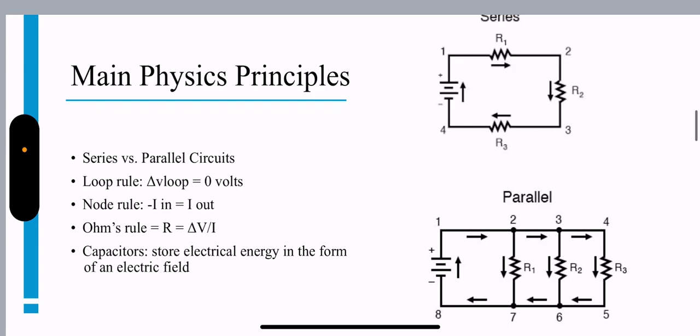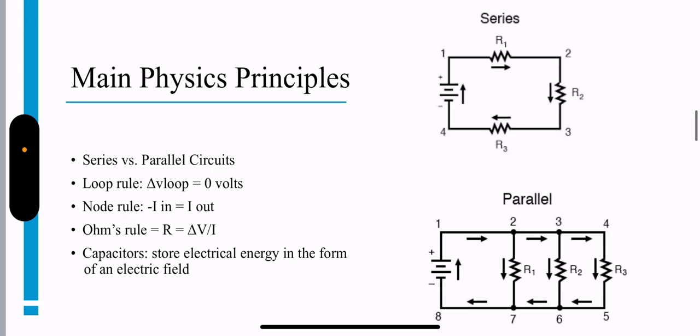Main physics principles. A series versus parallel circuit. A series is a loop while a parallel circuit has multiple loops that you can look at. The loop rule is that the change in electric potential difference across a loop is always zero.